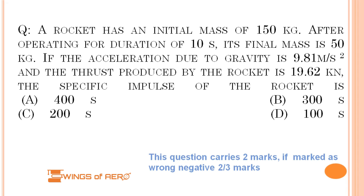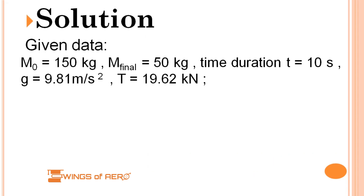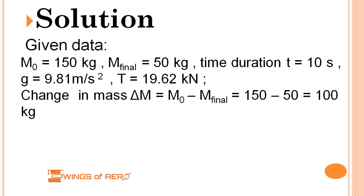Here comes the solution. Given data: the initial mass is 150 kg, the final mass is 50 kg, the duration is 10 seconds, acceleration due to gravity is 9.81 m/s², and the total thrust is 19.62 kN. From there, we can find the change in mass: 150 minus 50 gives us 100 kg.